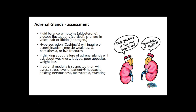If there's a problem with aldosterone, cortisol, or androgens, you might see changes in voice, hair, or libido. If it's just a cortisol problem, you might see Cushing's. If the medulla is affected, there will be more neurological symptoms — like headache, anxiety, nervousness, tachycardia, and sweating with that fight-or-flight response.